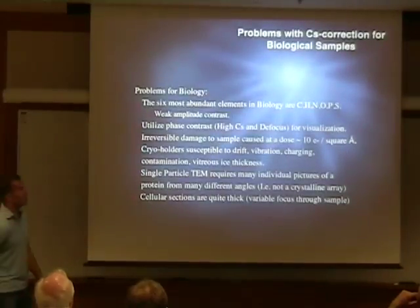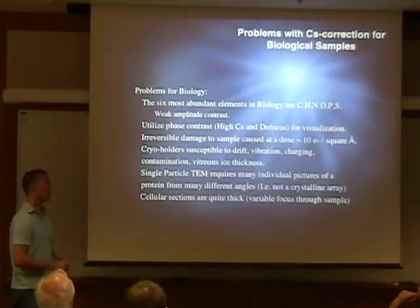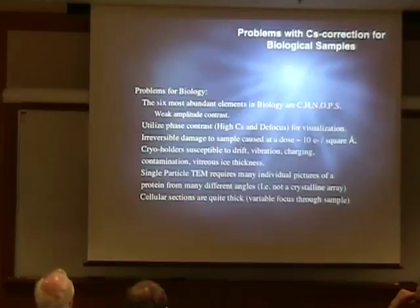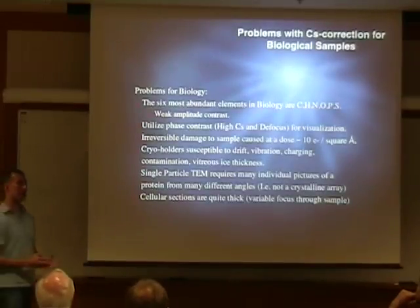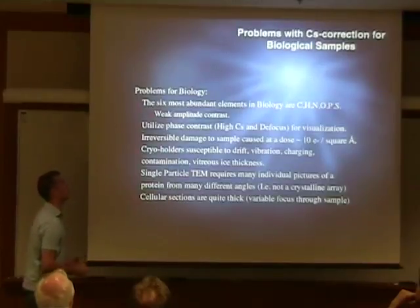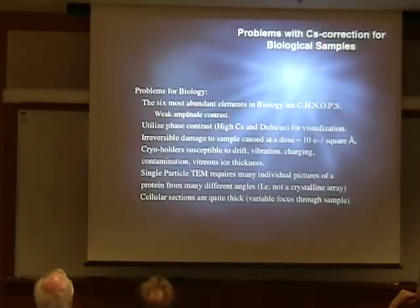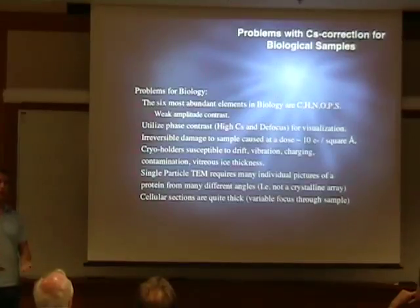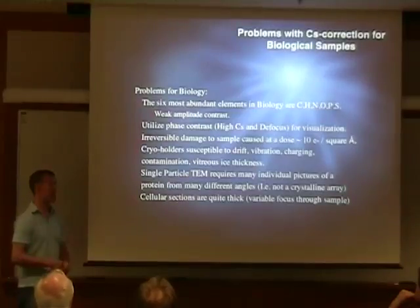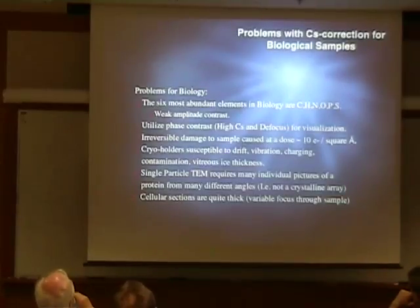For biological samples, we have a lot of issues. First of all, we have sample order to consider. If we have 2D crystals, the ordering of them; if we have single particles where we average a lot of individual proteins; and cellular sections are quite thick. All of these different sample limitations cause us to have certain resolution limits. Beyond that, we have the major problem of requiring phase contrast as the way that we actually visualize our proteins. We also have the normal issues of radiation damage, contamination, vibration, and drift.